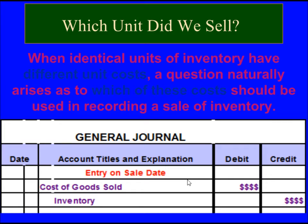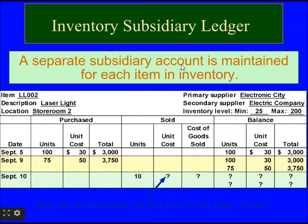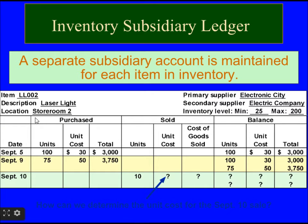The question arises: how do we know which cost should be entered? There could be different costs for the same kind of inventory unit purchased at different points in time. For example, on September 5 the company purchased 100 units at $30 per unit totaling $3,000, and on September 9 the same kind of unit was purchased at $50 per unit for 75 units, totaling $3,750.